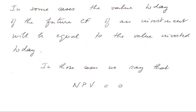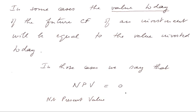In some cases, the value today of the future cash flows — and I cannot stress enough this concept of value today, which plays the most fundamental role in finance — will actually be equal to the value invested today. In those cases, we say that the NPV, which stands for Net Present Value, is equal to zero. The future cash flows produced will have exactly, altogether, the value that we invest today to create them. So their present value, net of the initial money invested, will be zero.